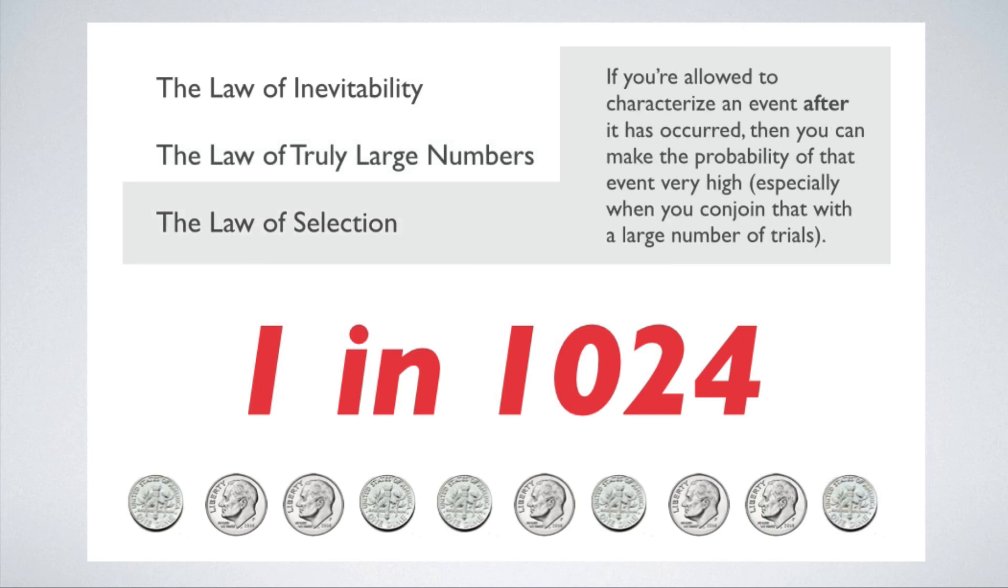The law of selection is also in play here. The principle says that if you're allowed to characterize an event after it's occurred, then you can make the probability of that event very high. In fact, you can make the event certain. For example, if I'm given a bullseye target and try to hit it with a dart, then there's a good chance I'll miss. But if I'm allowed to throw the dart first and then run up and draw a bullseye target at the location where the dart hit, then I can guarantee that I'll get a bullseye, because I've defined what a bullseye means after the fact. In our case, the sequence of coin tosses that survived our process of elimination was defined as the predicted sequence after the fact. So it was inevitable that my prediction would be successful.